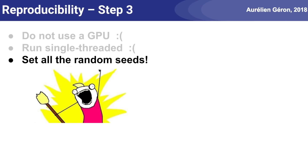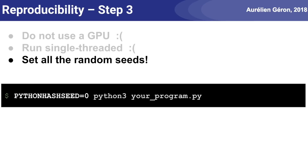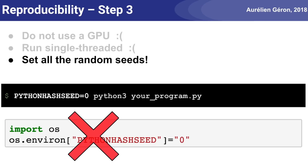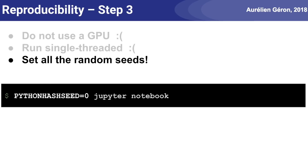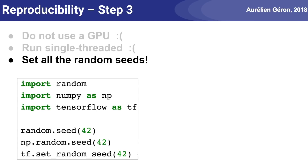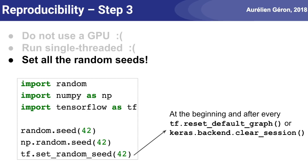Step 3: Set all the random seeds. First, you need to set the Python hash seed environment variable to zero before you start your program. This is used by Python for certain hash-based functions, for example to determine the order of items in sets and dictionaries. You can set it on the command line, but don't try to set it within your program — it won't work because Python reads this environment variable upon startup. You can also set this variable when starting a Jupyter server and all notebooks will have it set. Next, set the random seeds for the random number generators in Python, NumPy, and TensorFlow, as well as any other library you may use. TensorFlow's random seed should be set at the beginning of your program, but also every time you reset the default graph.